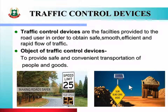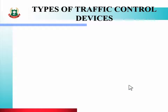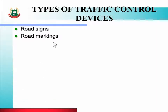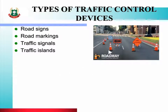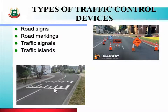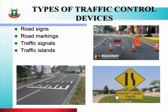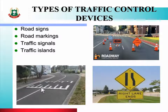Let us see about different types of traffic control devices. Alag-alag type ke traffic control devices kaun se hote hain? First hai road signs, second hai road markings, third hai traffic signals, and fourth hai traffic islands. Jaise ki aap figure mein dekh rahe ho — roadway ke upar signs lagaaye hain, road ke upar markings ki hain, and traffic signals bhi dekh rahe ho. So students, these are the various types of traffic control devices provided on the road side.